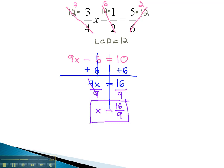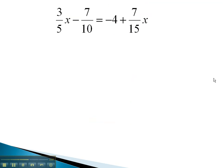Let's try another example that might be a little more involved, that we can solve by clearing the denominator. Here, you notice we have the negative 4, which is not a fraction. We can quickly make it a fraction by putting it over 1. Now, we can find the least common denominator of 5, 10, and 15. This will be 30.